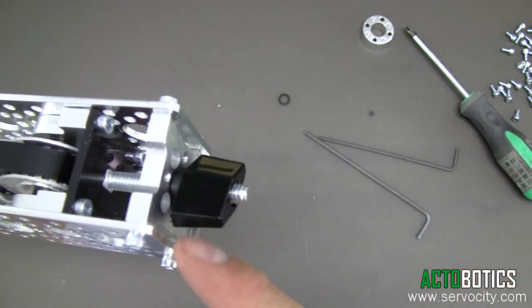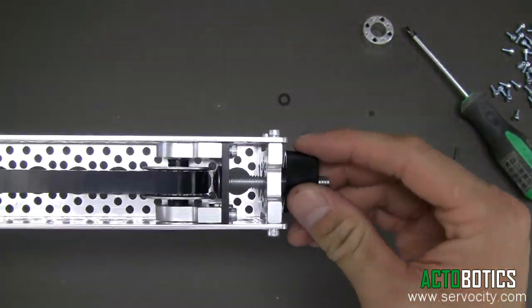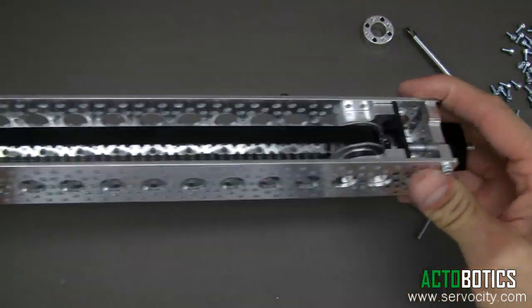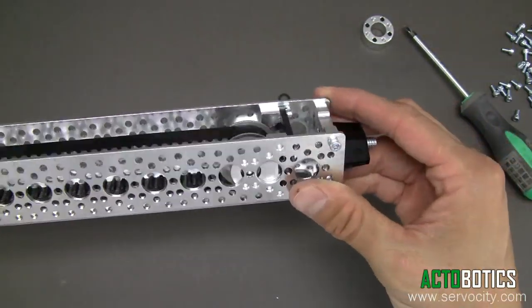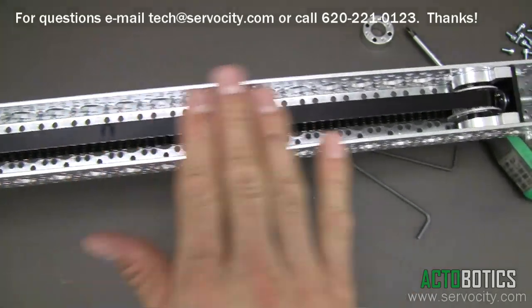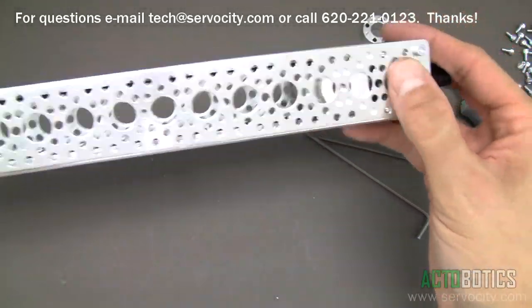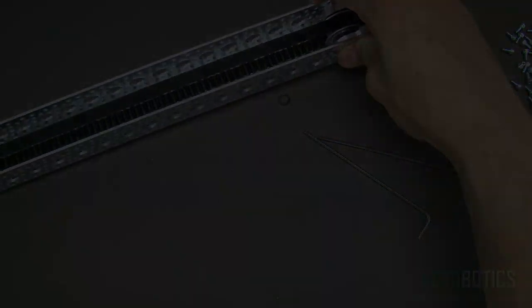Therefore you have a nice flat section there that it will twist and rub against. Your system is just about ready to go. We'll show you how to begin attaching your top plates that will slide along and attach to your belt, as well as the feet for the bottom. There you go, thank you.